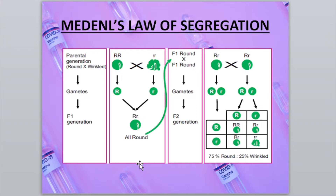Before studying segregation, you should know some things about inheritance. Mendel described four characteristics that should be present during selection of a plant for genetic study. First, the plant should have different contrasting traits, and in each contrasting trait there should be only two possibilities — for example, in height: tallness and dwarfness; in seed shape: round and wrinkled; in seed colour: the two alternatives.